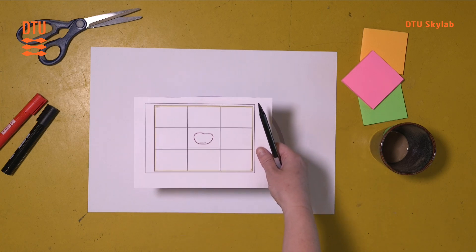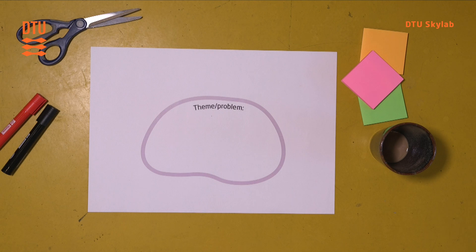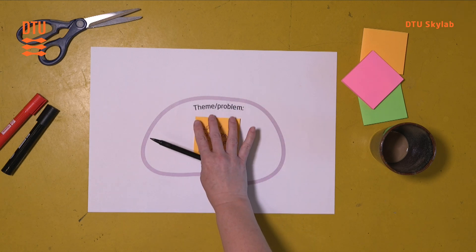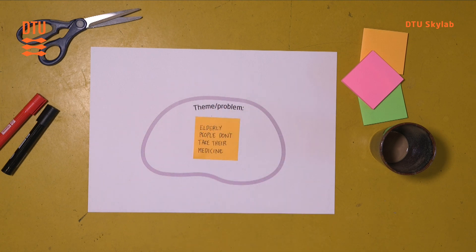As you can see, this is just the center of a much larger poster, but this is what we'll be using to demonstrate. So for instance, the example that I'll be using here is that the theme we are working with is that elderly people tend to not take their medicine.